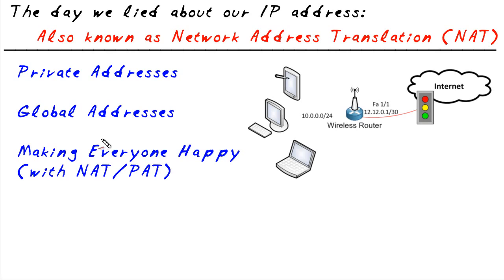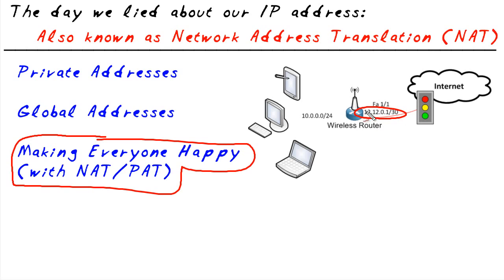So that, my friends, is how we can make everybody happy. We can take a single global address given to a customer for the outside interface of the router, and hide all of our internal addresses using network address translation and port address translation so that the internet sees just the one global address. This router is responsible for making sure the untranslations on the way back for return traffic make it to their rightful destinations. I've had a lot of fun sharing why we need NAT and how it works — I hope this has been informative for you, and I'd like to thank you for viewing.